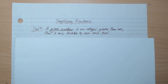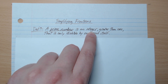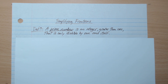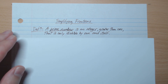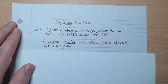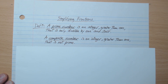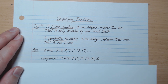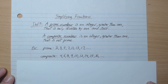A prime number is an integer greater than one that is only divisible by one and itself. Notice that this is an integer - not just any kind of number like 3.2 or 7.6 - it has to be an integer: 0, 1, 2, 3, 4, 5, 6, etc. A composite number is an integer greater than one that is not prime. The prime numbers at the very beginning are 2, 3, 5, 7, 11, 13, 17, etc.